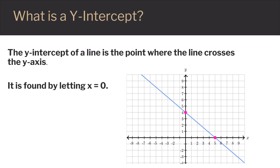Now let's do the same thing to find the y-intercept. The y-intercept is the point where the line crosses the y-axis. We find it by letting x equal 0.